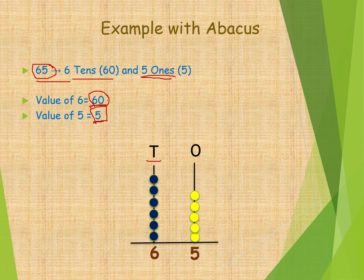In tens place, what is the number? Six. That's why we are taking one, two, three, four, five, six - six beads for tens. Next in ones, it is one, two, three, four, five - five beads in ones place. It becomes 65.